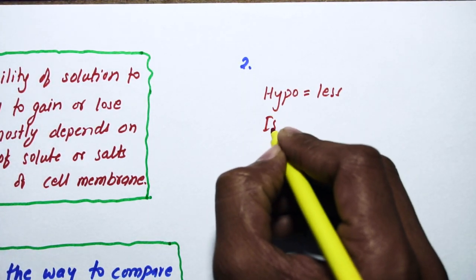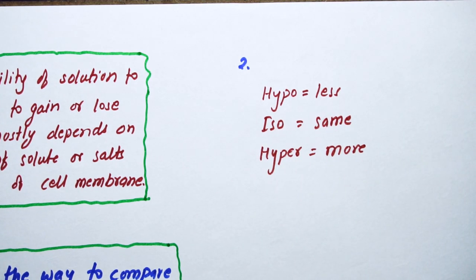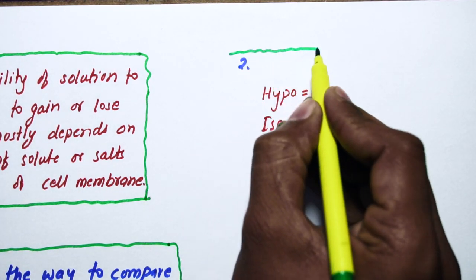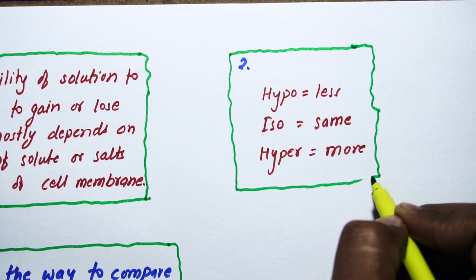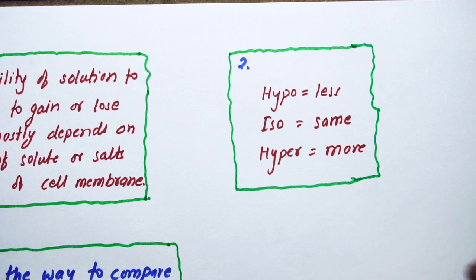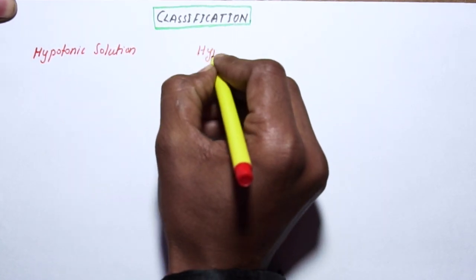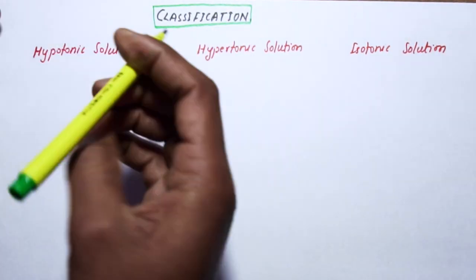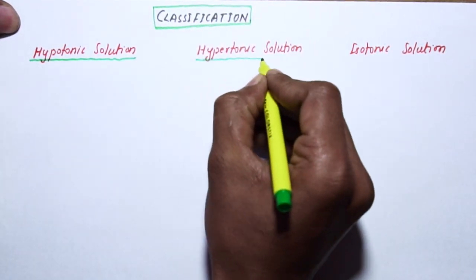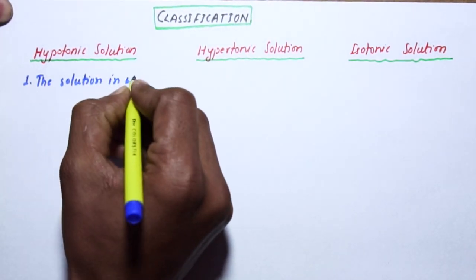Examples include hypertonic, hypovolemic, hypotension, hypertension, isosmotic, etc. Now we will classify tonic solutions into three categories: hypotonic solution, hypertonic solution, and isotonic solution. We will compare and contrast the solutions to the cell.